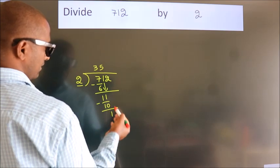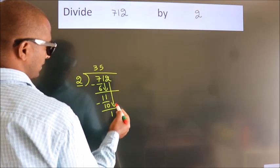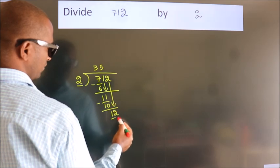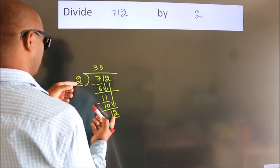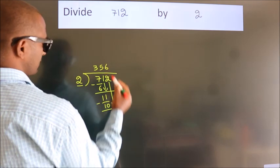After this, bring down the beside number. So 2 down, so 12. When do we get 12? In 2 table, 2, 6, 12.